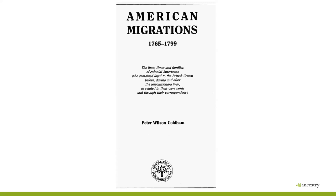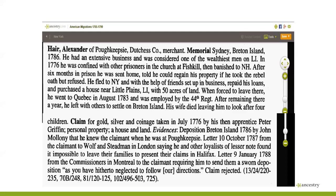I typed in the name of one of my collateral ancestors by the name of Hare and found this — it went into detail showing that he was a confined prisoner at a church in Fishkill in 1776, banished to New Hampshire, six months in prison, went to New York, purchased a house, was forced to leave there, went to Quebec in August 1783, stayed one year, left with others to settle in Cape Breton Island, and four children and wife died there. On October 10th, 1787, from Alexander Hare to Wolf and Stedman in London — he doesn't get his claim, which is interesting because he ended up being the representative for Loyalists in Cape Breton Island. Just a fabulous resource to search on Ancestry for your people.